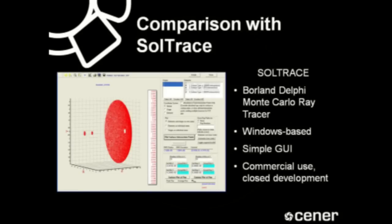We are ready to present the results of the comparison between Tonatiuh and SolTrace, a program developed by the National Renewable Energy Laboratory (NREL) that can also be used to simulate the optical behavior of solar concentrating systems. SolTrace has been experimentally validated by NREL based on data from experiments carried out at NREL's high concentration solar furnace and elsewhere. It is coded in Borland Delphi, is a Monte Carlo raytracer, targets only the Windows operating system, and has a relatively simple graphical user interface.